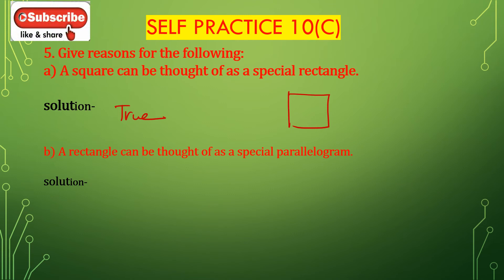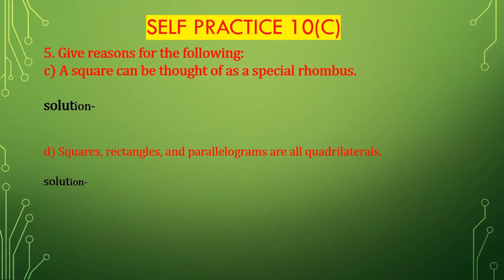Bit B: a rectangle can be thought of as a special parallelogram. In a rectangle, all opposite sides are equal. Bit C: a square can be thought of as a special rhombus. In a square, all four sides are equal. In a rhombus, all four sides are also equal, but their angles are not equal to 90 degrees. So a square is a special rhombus.